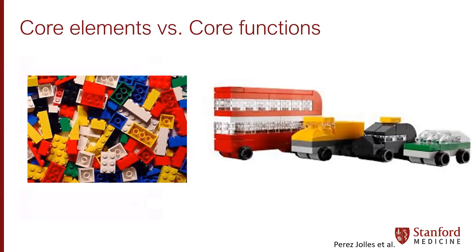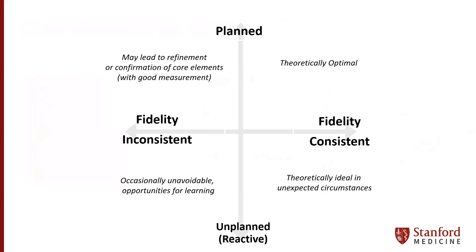When we think about core elements versus core functions, the goal is to make sure that the function or goal of an aspect of the intervention is preserved, but there can be different ways to do it. For something like psychoeducation or consumer education, if the goal is to make sure people understand the problem and how it will be addressed or prevented, that could take the form of a video, delivery by peers or a provider, or written material — as long as that information is successfully conveyed. As we think about adaptations, we also need to consider how the way we plan and execute them can preserve or not preserve these core elements or functions.